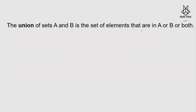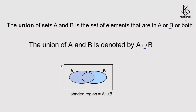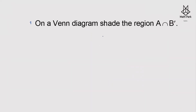The union of sets A and B is the set of elements that are in A or B or both. It is denoted by A∪B. The shaded region shows A∪B — the union combines everything in both sets.